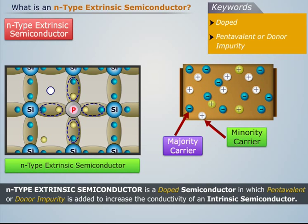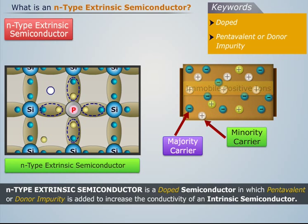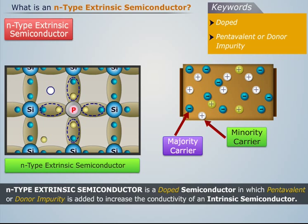Since an N-type extrinsic semiconductor has large number of immobile positive ions, along with the electrons and holes, so it is electrically neutral.